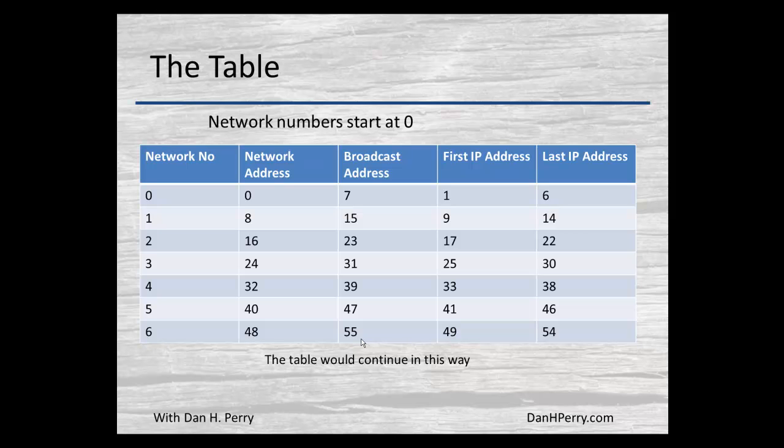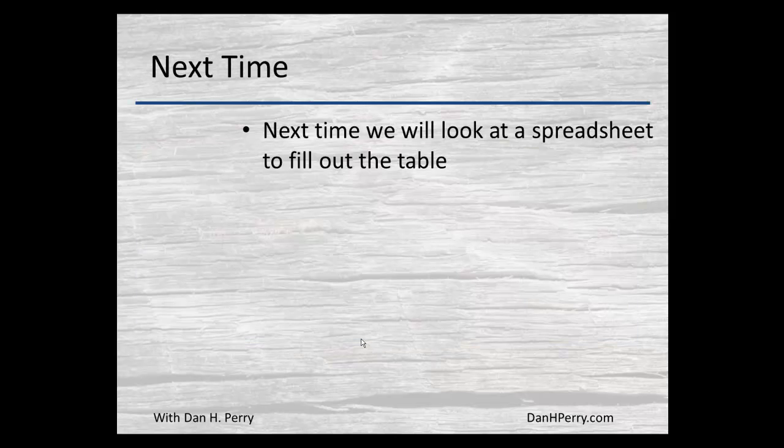You can continue down — the last network's broadcast address will be 255 in that octet. Once again, the first and last usable IP addresses are one more than the network number and one less than the broadcast address respectively. In the next video, we're going to look at building a spreadsheet that will fill out that table and make it much easier for us to build our table of networks.